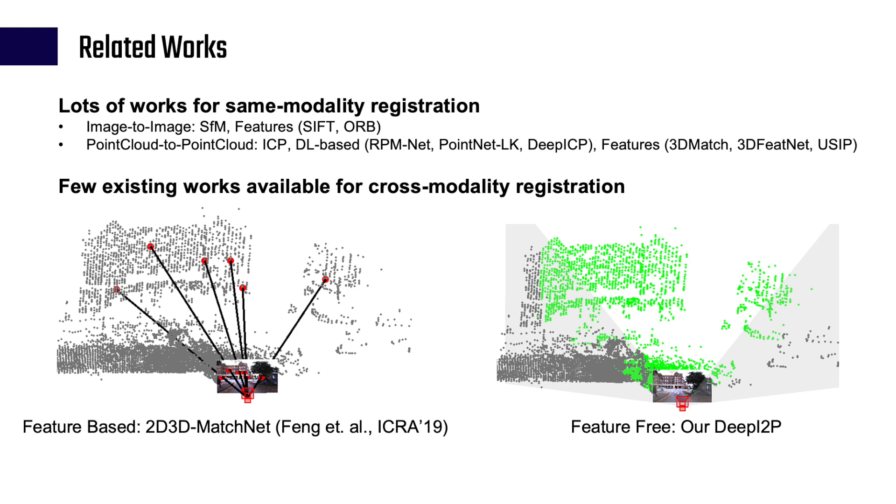Our Deep I2P circumvents the challenging need to learn cross-modal feature descriptors for registration by casting the problem into a two-stage classification and optimization framework. Our idea is shown in the right figure.